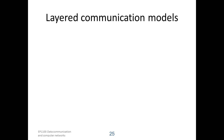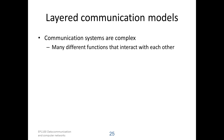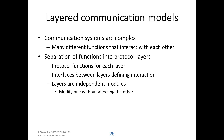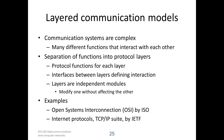The model that we use for communication systems is based on layering. Communication systems are complex — they have many different functions that interact with each other. So we separate the functions into protocol layers. For each layer, we specify what functions it should perform, and we specify interfaces between the layers for the interaction of the functions. The layers are independent modules, so you can modify a layer without influencing the function of the layer above or the layer below. Examples of layered communication models are the Open System Interconnection by ISO, or the Internet Protocols by IETF.